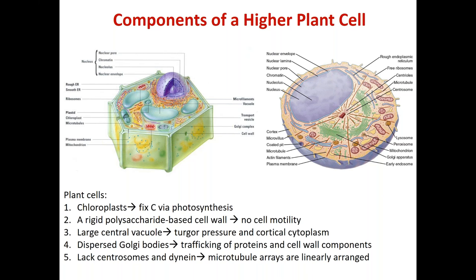So then how do microtubules nucleate? Microtubules are nucleated by the same protein complex — the gamma tubulin ring complex. The difference is that these gamma tubulin ring complexes are not clustered and concentrated at the centrosome; they are rather dispersed. The basic mechanism for nucleation of microtubules, requiring a gamma tubulin ring complex, is the same in plants and animals. How the gamma tubulin ring complex is spatially organized is different.